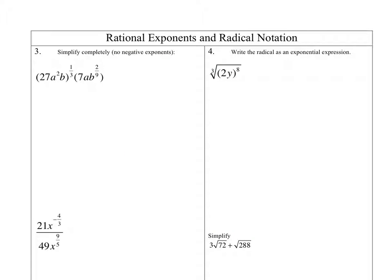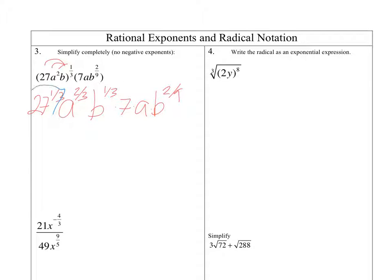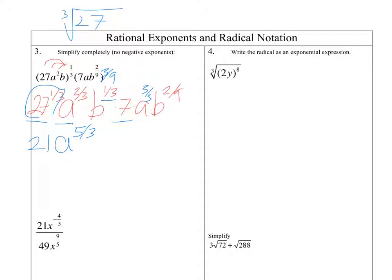Next, we're looking at rational exponents and radical notation. I'm going to start off with some rational exponents — first I'll do some distribution, then some reducing. So we've got 27 to the 1 third, A to the 2 thirds, B to the 1 third, and then times 7 times A times B to the 2 ninths. I happen to know that 1 third means the cube root, and cube root of 27 is 3. 3 times 7 gives us 21. For the A's, we've got A to the 2 thirds and A to the 1 is A to the 3 thirds, so that would be A to the 5 thirds. Then for the B's — I've got thirds and ninths — 1 third is the same as 3 ninths. Adding 3 ninths plus 2 ninths gives 5 ninths, so B to the 5 ninths. This would be my final answer.